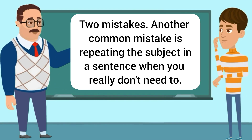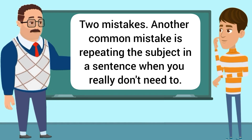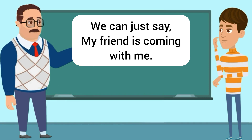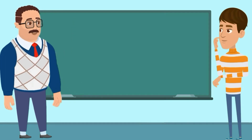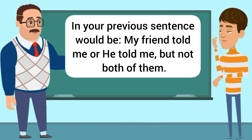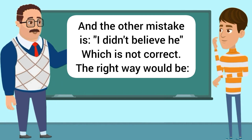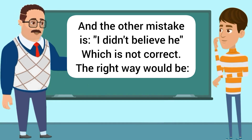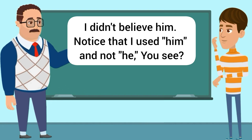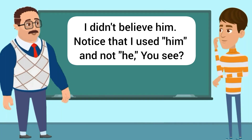Two mistakes. Another common mistake is repeating the subject in a sentence when you really don't need to. 'My friend she's coming with me' — we don't need to say 'she.' We can just say 'my friend is coming with me.' If we talk about her again, then we could say 'she' because we know who we are talking about. In your previous sentence it would be 'my friend told me' or 'he told me,' but not both of them. And the other mistake is 'I didn't believe he,' which is not correct — the right way would be 'I didn't believe him.'